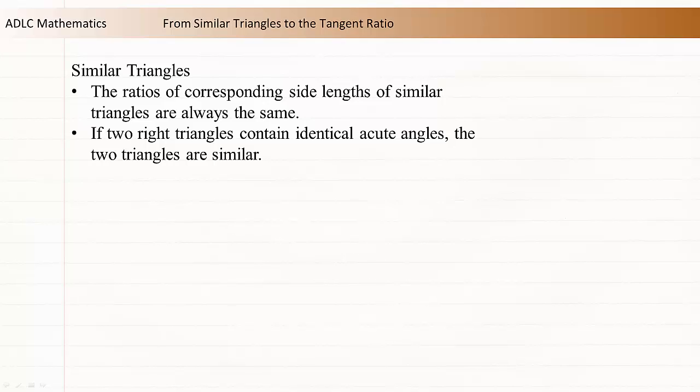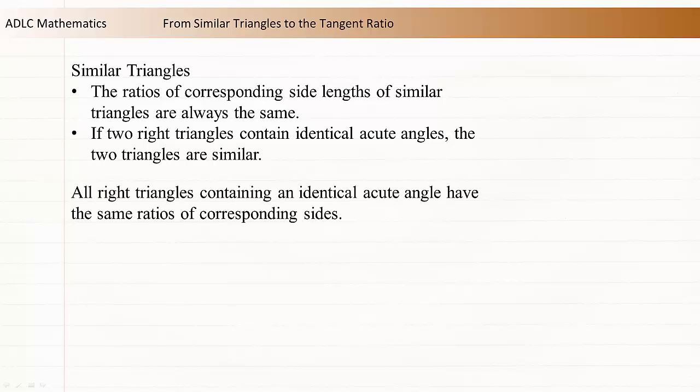We've now discussed two ideas related to triangles. If two right triangles contain the same acute angle, they must be similar. If two triangles are similar, the ratios of corresponding sides are always the same. From these two ideas, we can draw the conclusion all right triangles containing an identical acute angle have the same ratios of corresponding sides.